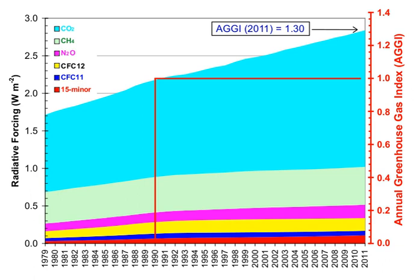Ice cores provide evidence for greenhouse gas concentration variations over the past 800,000 years. Both CO2 and CH4 vary between glacial and interglacial phases, and concentrations of these gases correlate strongly with temperature.